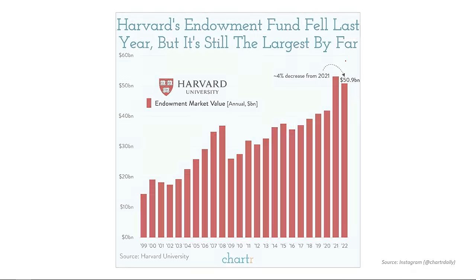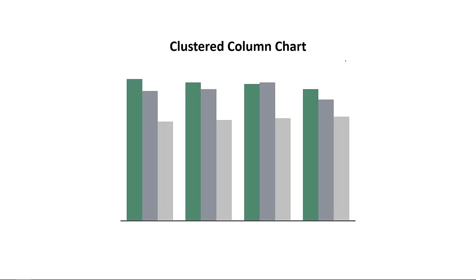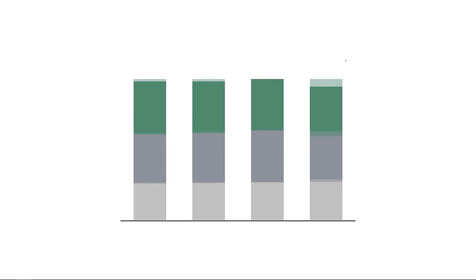With a column chart, you have the same variations as a bar chart: clustered column chart, stacked column chart, and 100% stacked column chart. Again, the question you want to ask yourself is: what's easiest to compare with each of these charts? Are you comparing subcategories, category totals, or the subtle changes in categories over time?